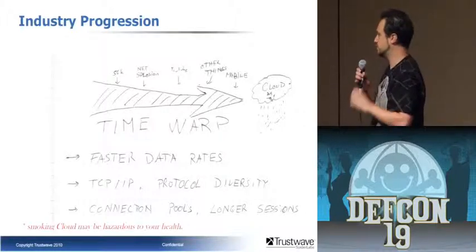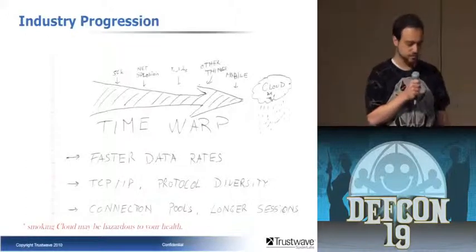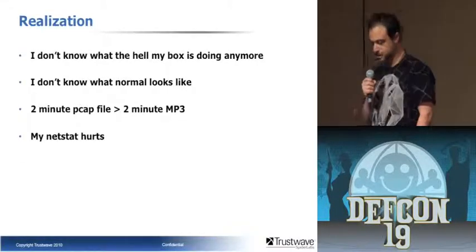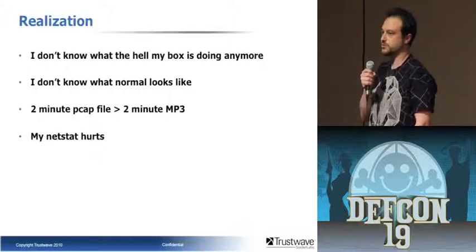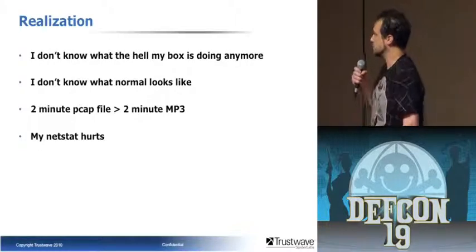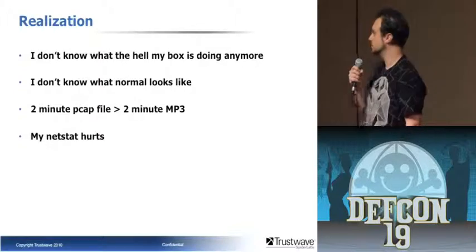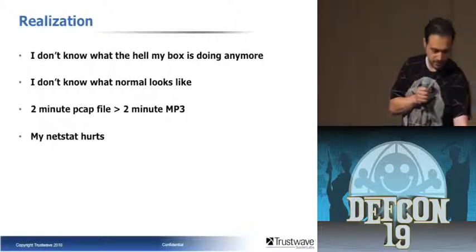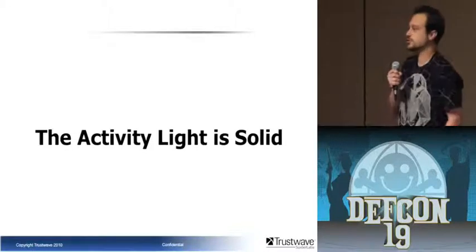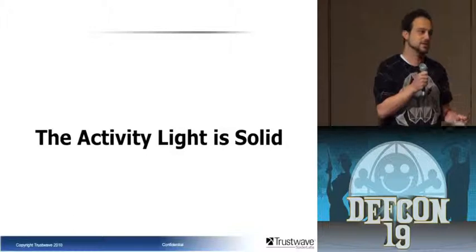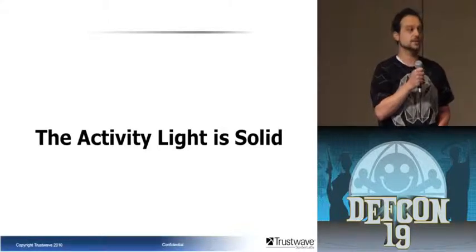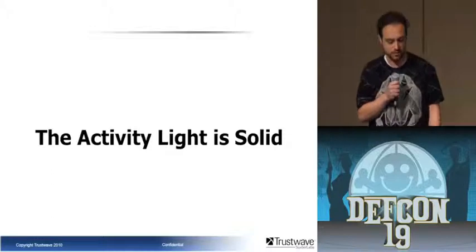Somewhere along the line we sort of lost track of what our machines are doing. We've got this one link light, connection pools, longer sessions, and stuff like that. I don't know what the hell my machine's doing anymore. My netstat hurts. The bad sign is when a two-minute PCAP file is larger than a two-minute MP3 — I think we have some serious stuff going on on the wire. We have one LED that just says something's happening. It's solid. That's all we really know.